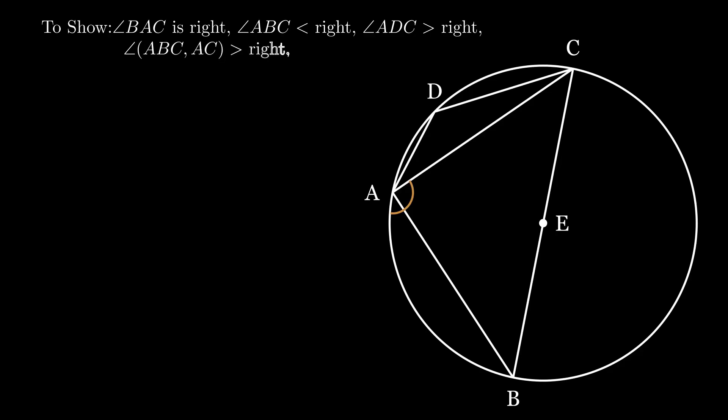We also want to show that angle made by the circumference arc ABC and the straight line AC is greater than a right angle, and that angle made by the circumference arc ADC and the straight line AC is less than a right angle.